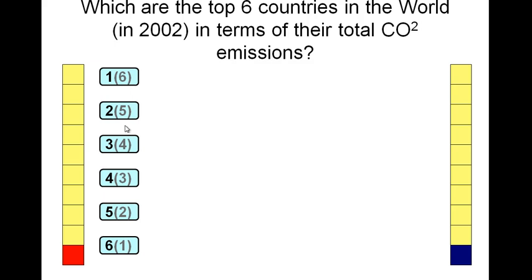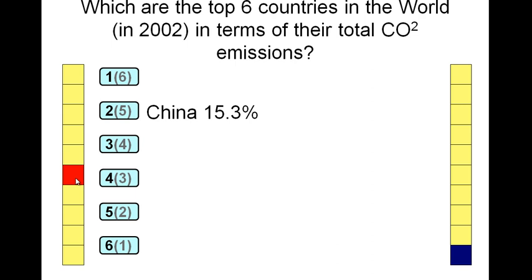Let's say they called out China — that's currently in second place — so when I click on number two it shows China, so I have to know what the answers are. If they get China they get five points because it's the second answer, and I can just click to move the red team score up.